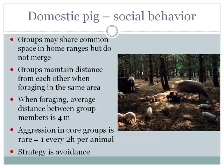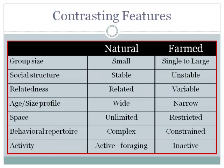Groups may share common space in home ranges but don't merge or interact. Groups maintain distance both from each other and when foraging within the same group — the average distance between group members while foraging is around four meters. That spread prevents aggressive interactions over food. Within these core groups, aggression is very rare — maybe only once every two hours per animal. The strategy is very much one of avoidance.